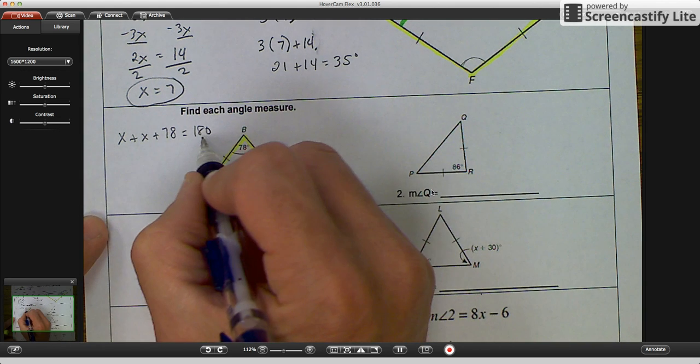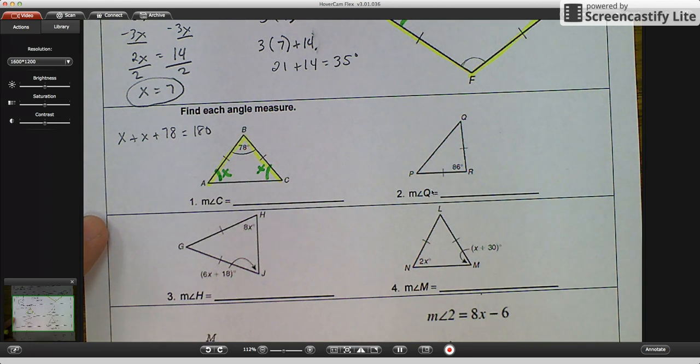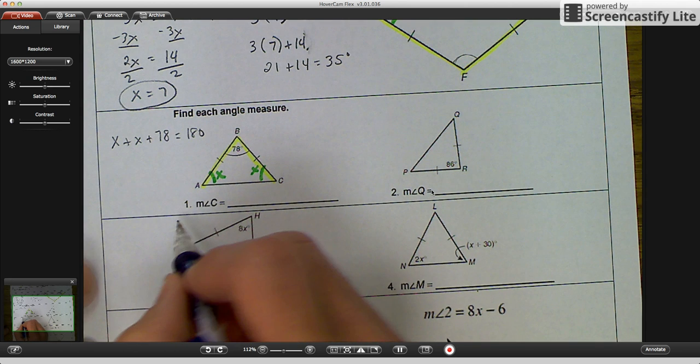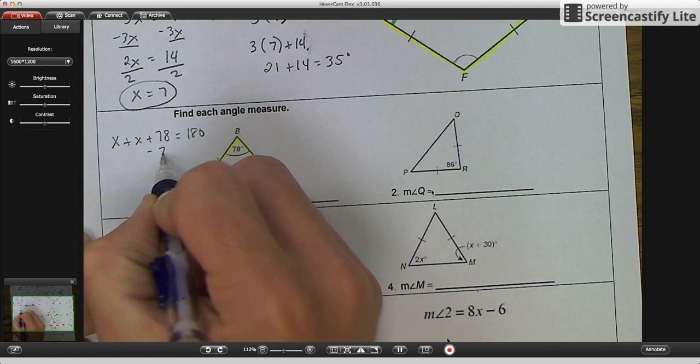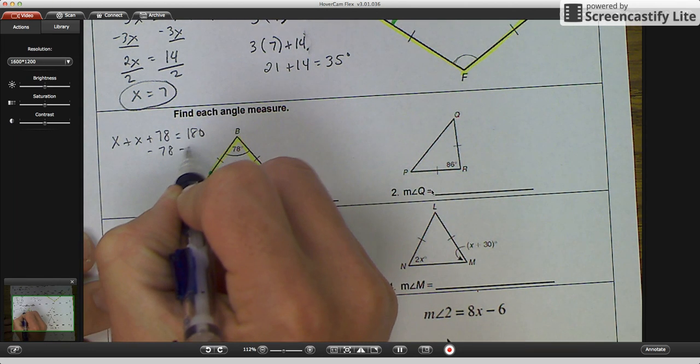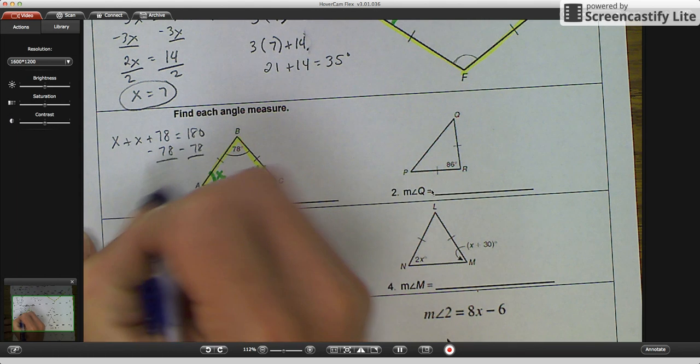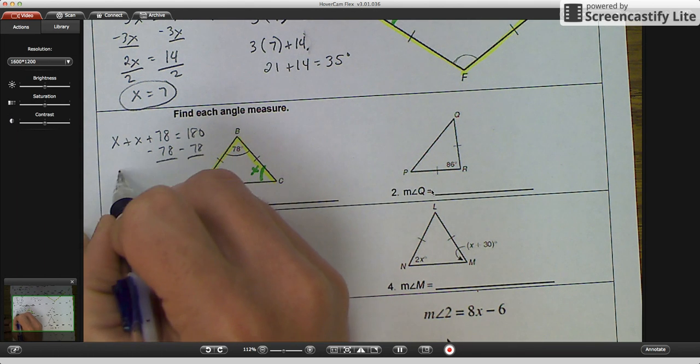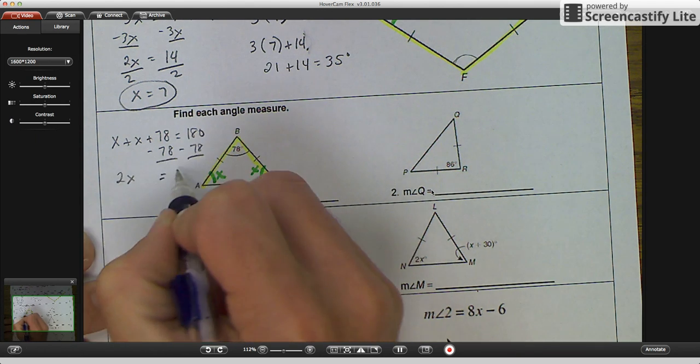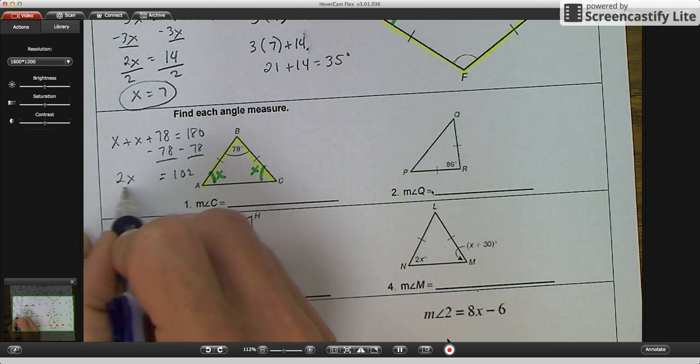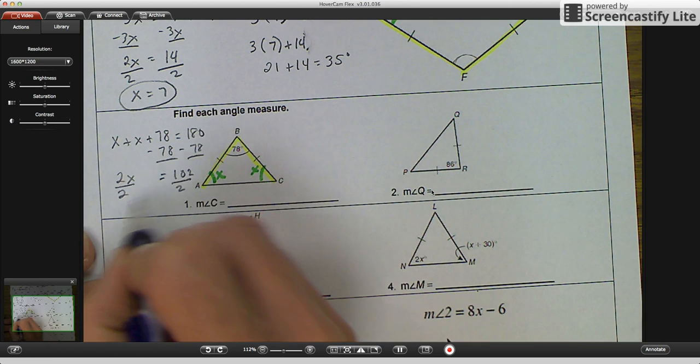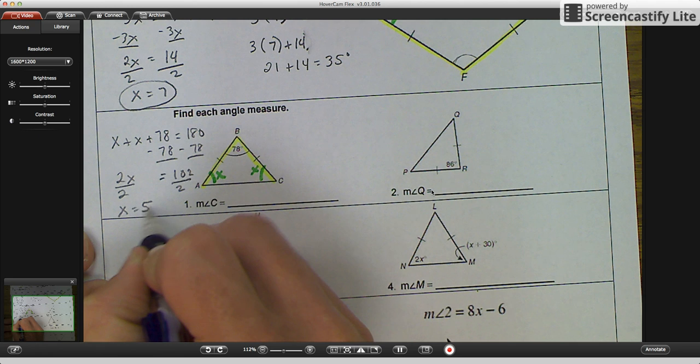And then we're going to solve this equation to figure out what the measurement of angle A is equal to 102. Divide by 2, divide by 2, X equals 51 degrees.